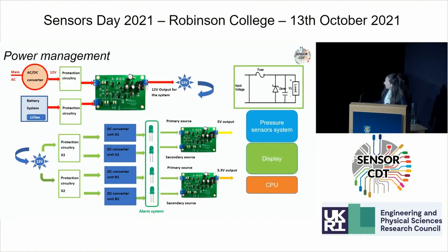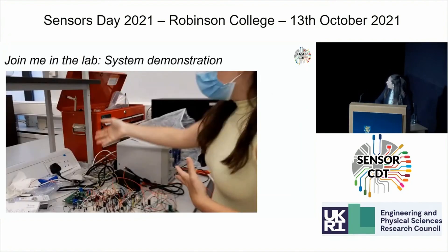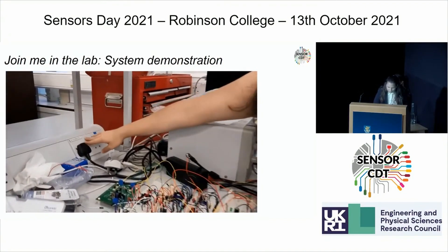Redundancy is incorporated so that if any components fail, the system can switch to the second DC converter and continue to power the whole system. All components are easily sourced and replaceable in case of damage in a harsh environment. Rather than me talking for another minute, I'll give a short demonstration.